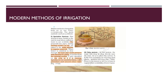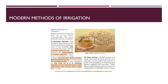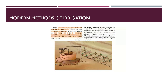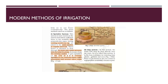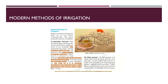In the diagram of the sprinkler system, you can see water being sprinkled through the sprinklers on the field. A pump is attached to the main line, which carries water to the perpendicular lines where the rotating nozzles are fitted, and they sprinkle water throughout the field.